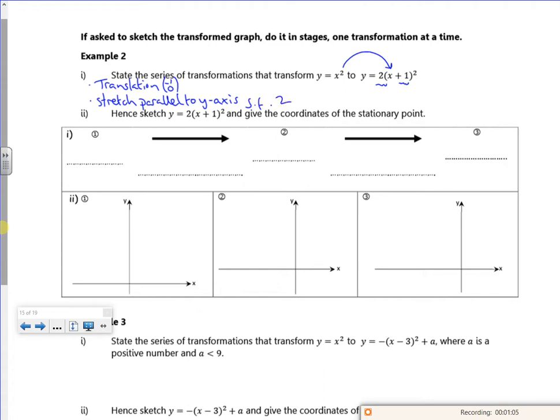Right so here I am. So I start off with x squared. I do the translation of minus 1, 0. So that gives me y equals x plus 1 squared. Now remember translation minus 1, it's 1 to the left but I have to do it as plus 1 there.